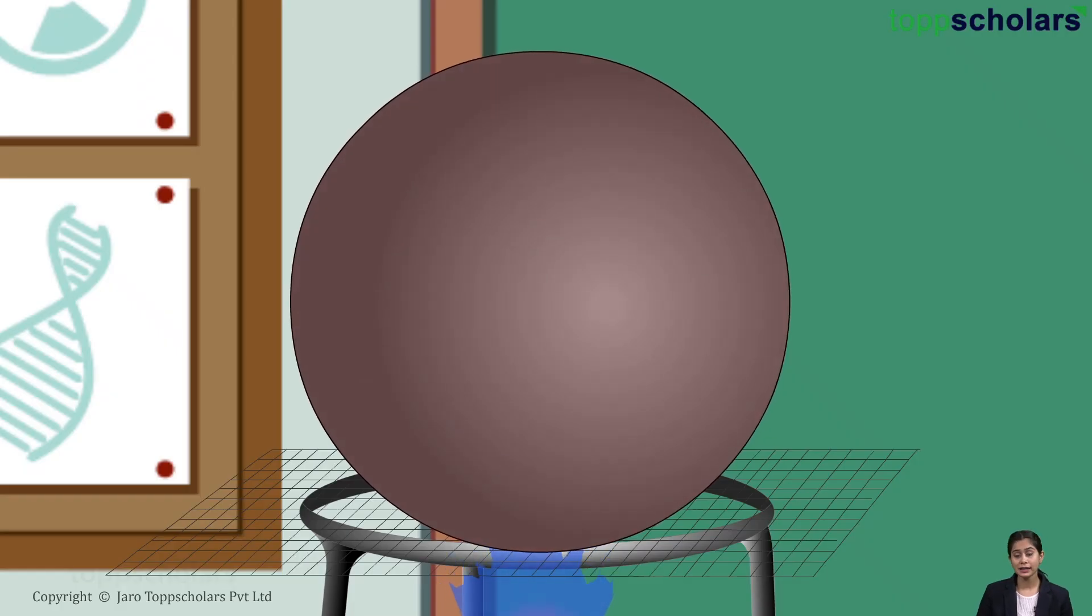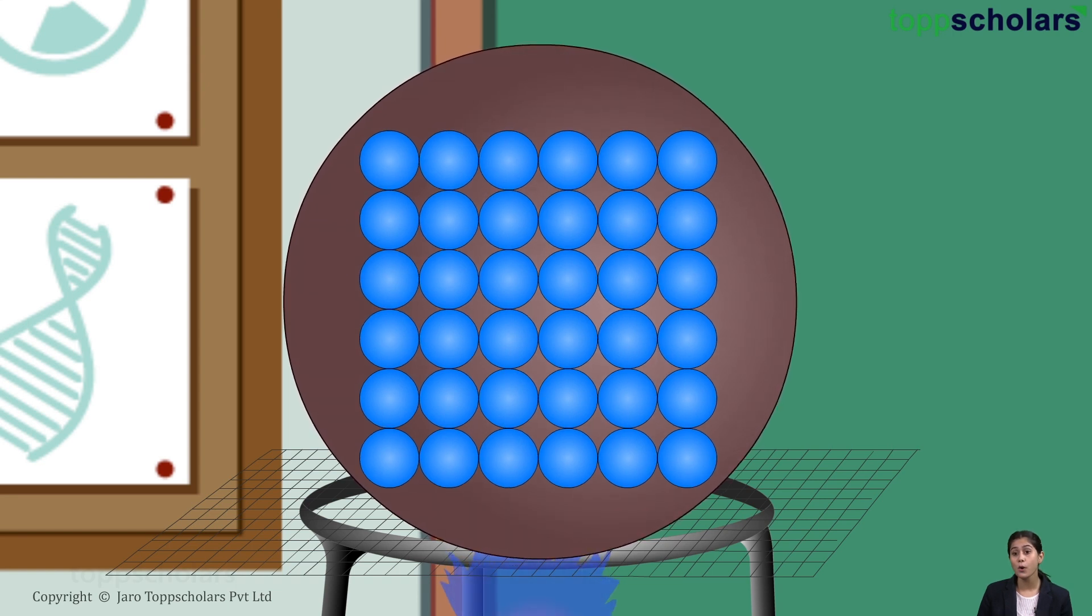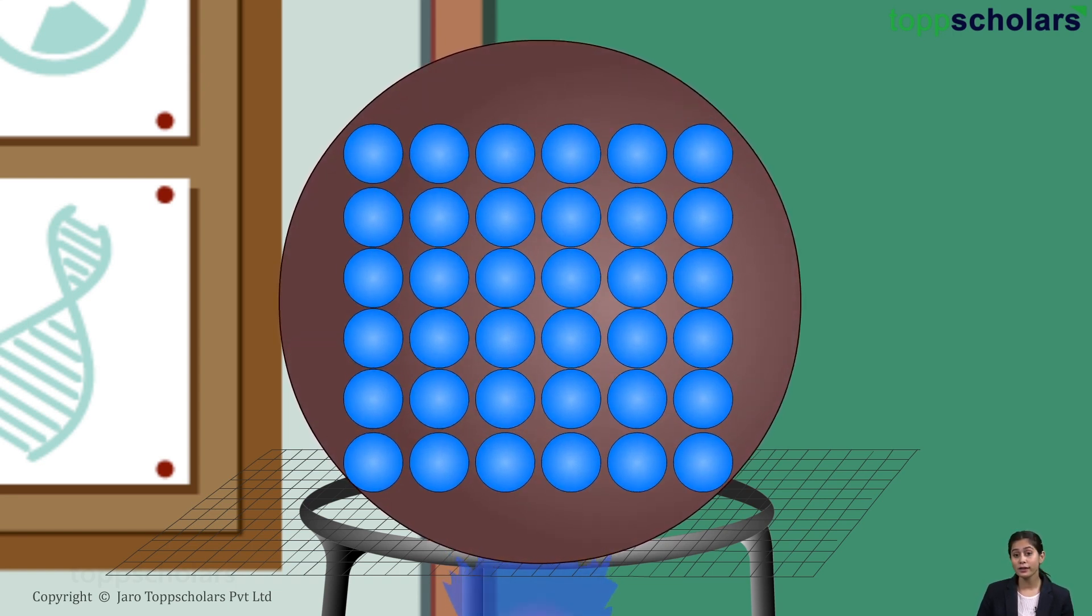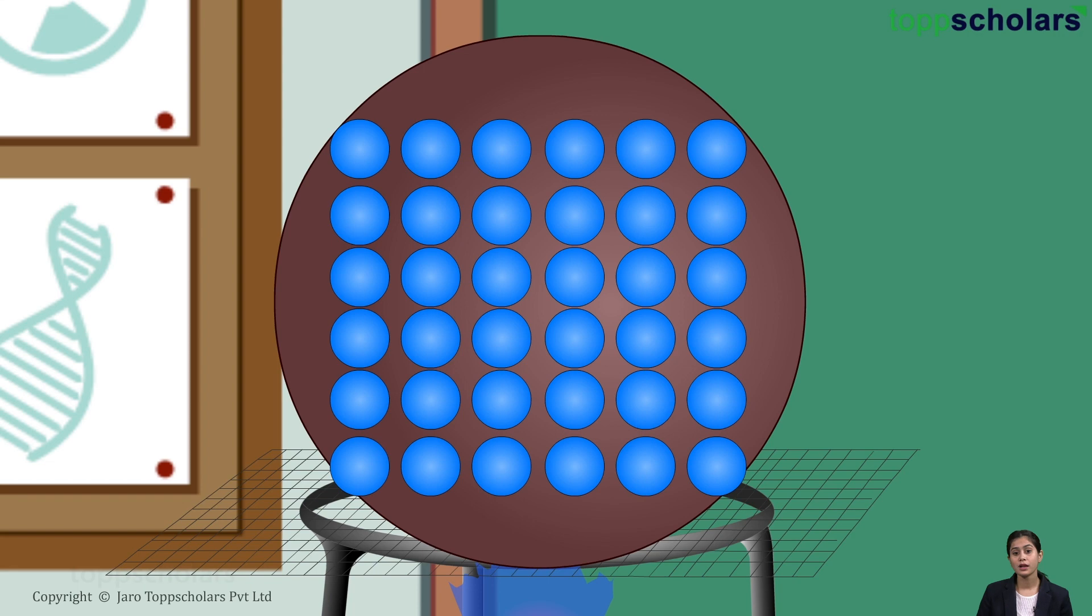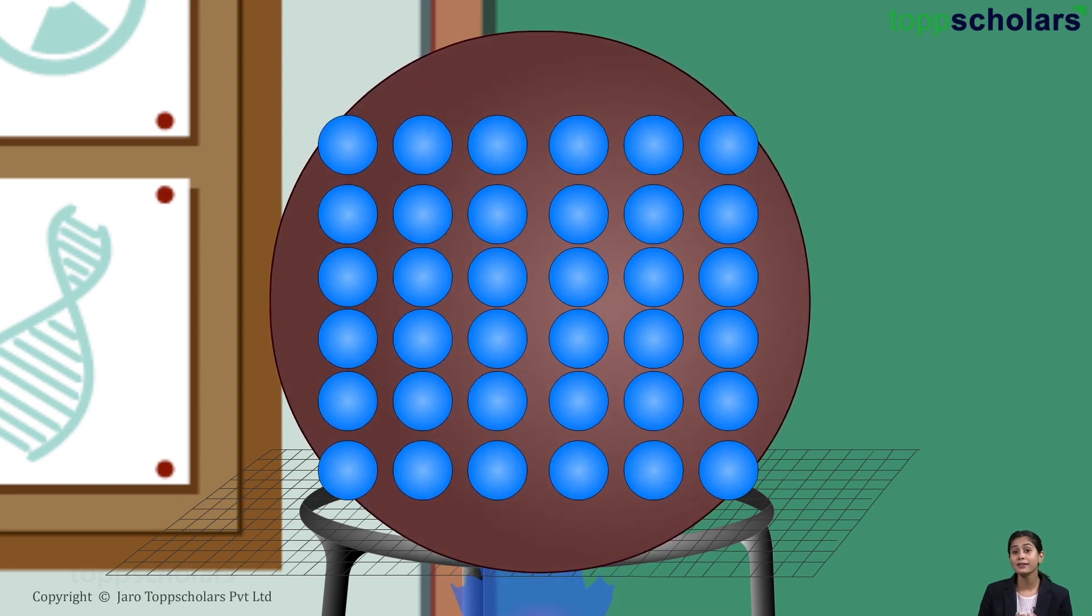Due to heating, molecules of the material acquire more energy. This causes more movement in them. Thus, the molecules are spread apart.